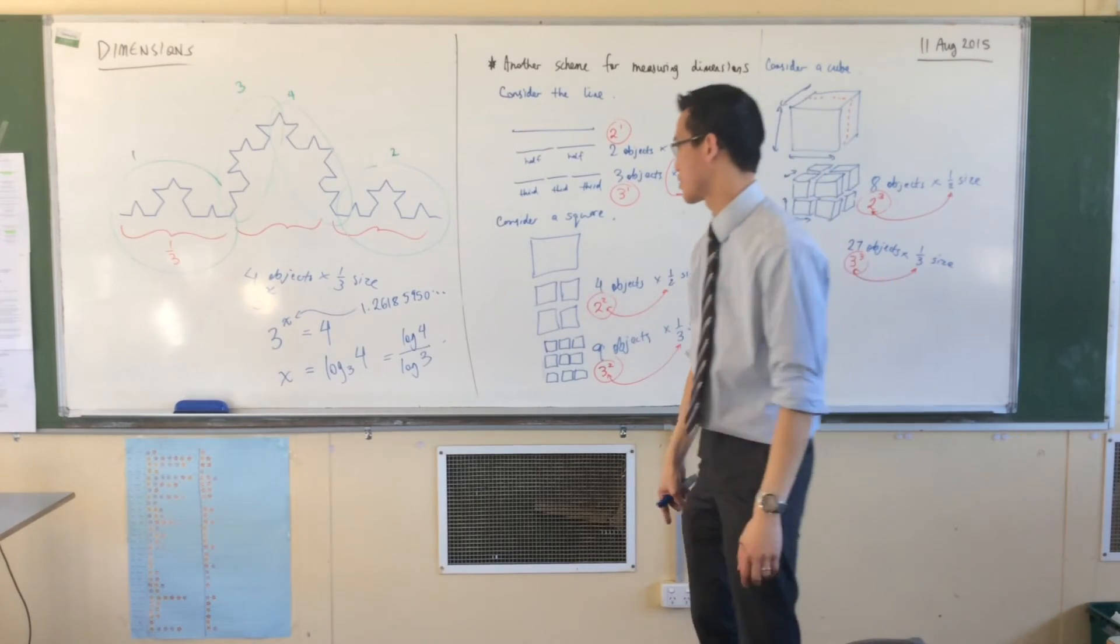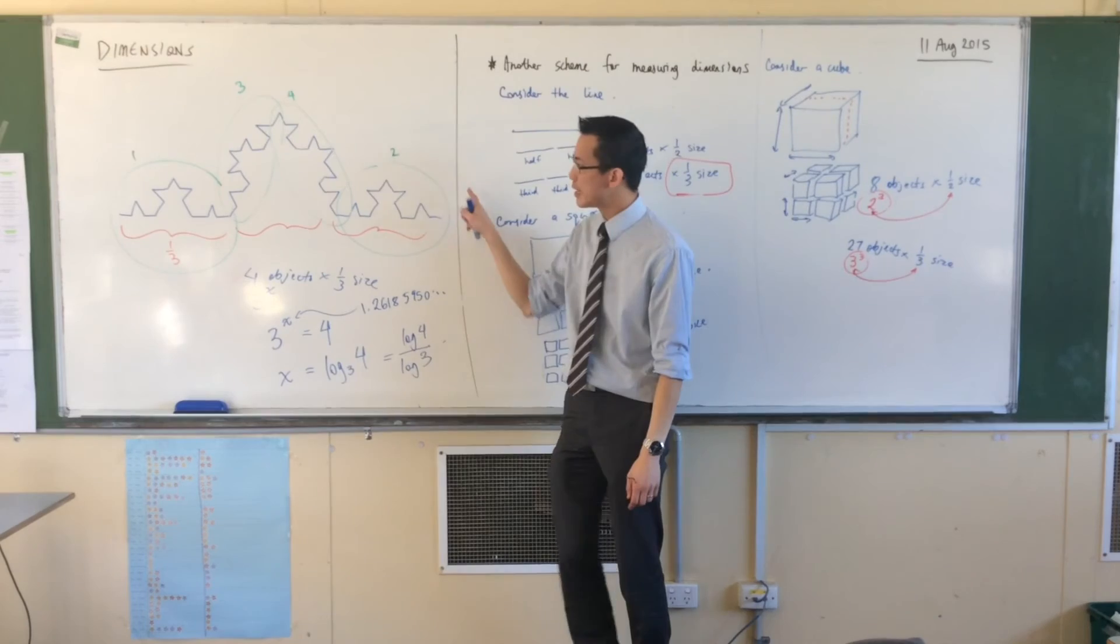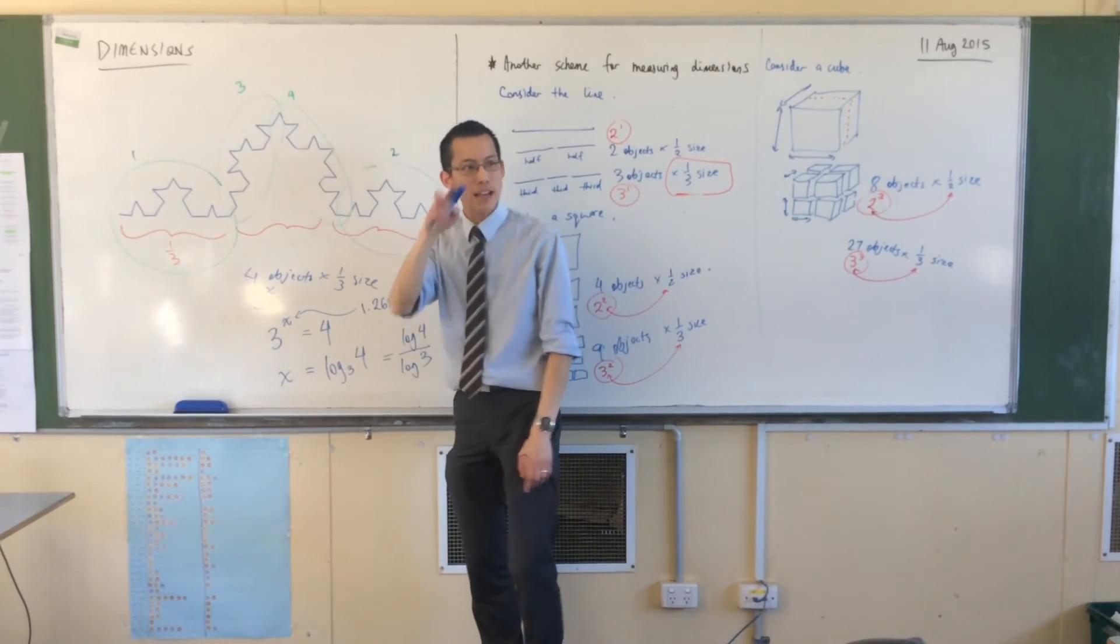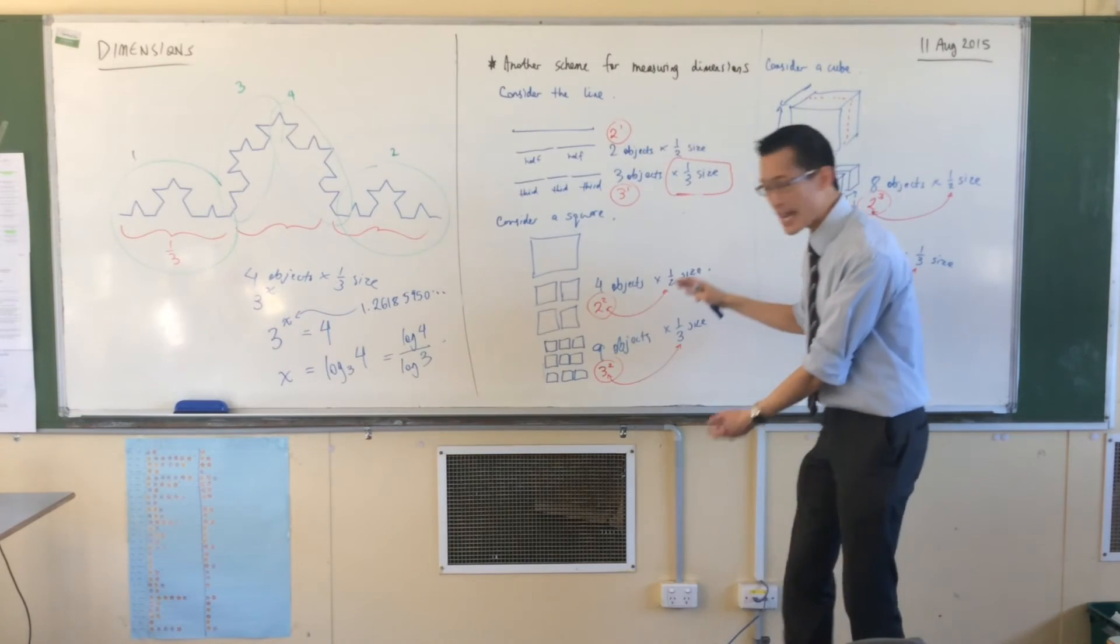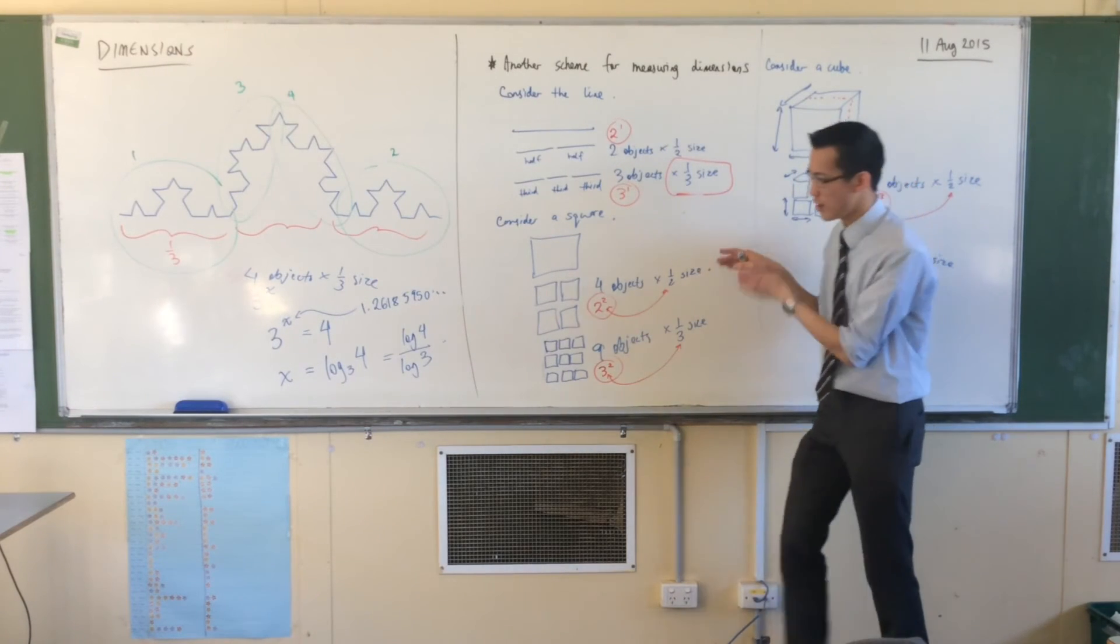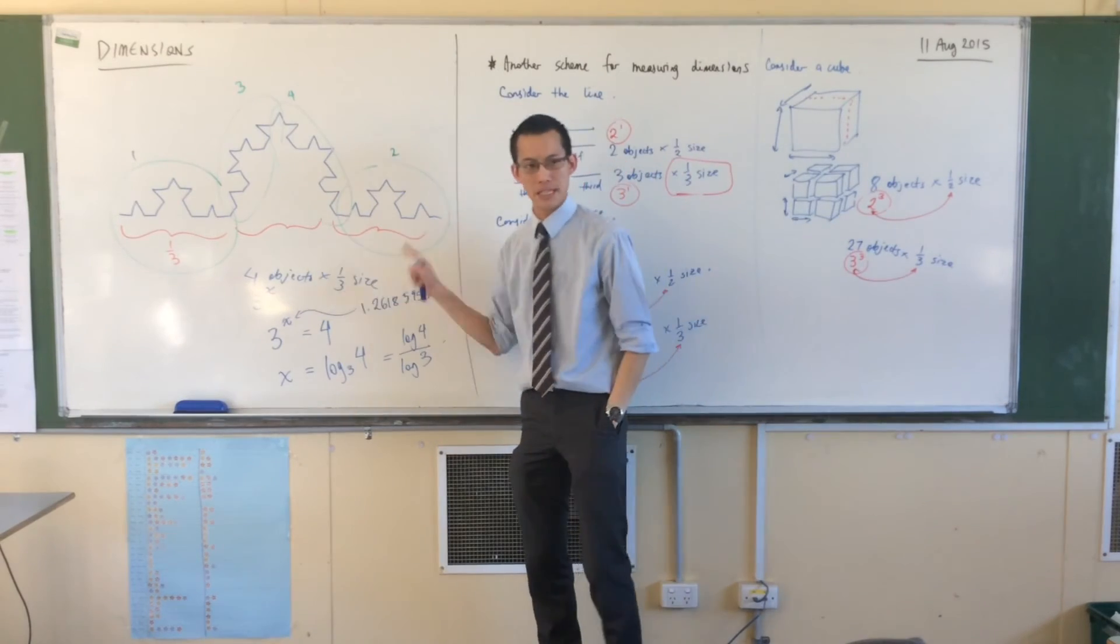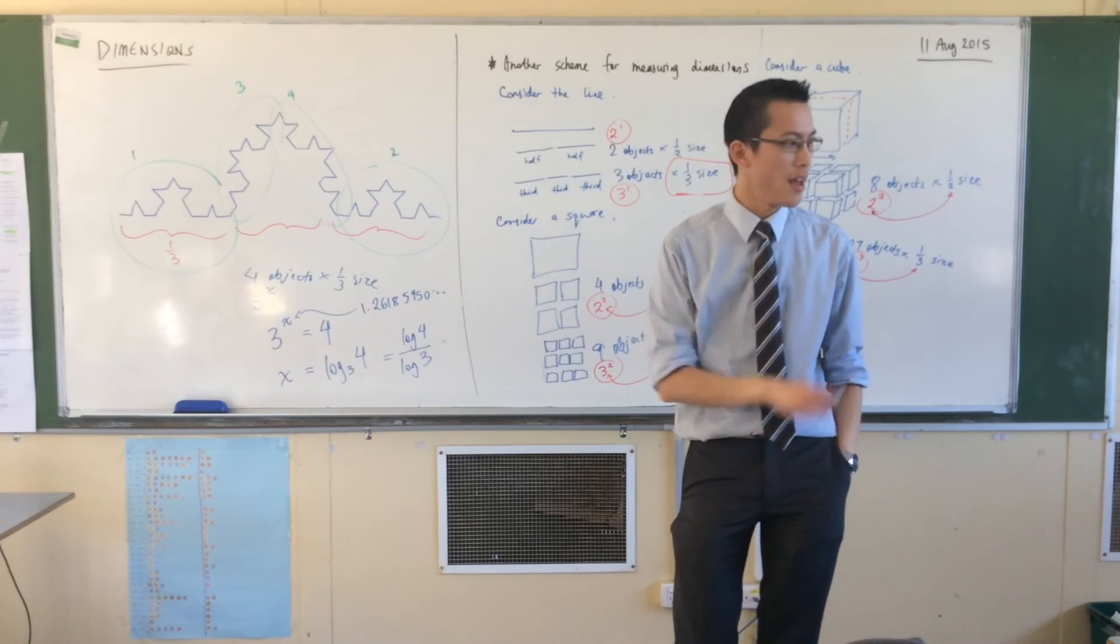So, what have we just established? This is a fractal. It looks like a line. I drew it. I drew the whole thing without picking up my marker. It takes up space in two dimensions, kind of, but when you crunch the numbers in this scheme of measuring dimensions, you get something else out.